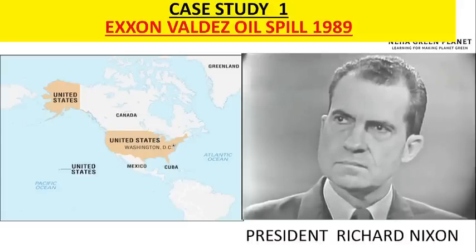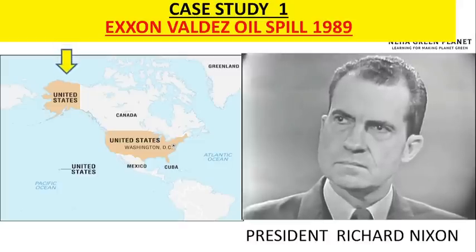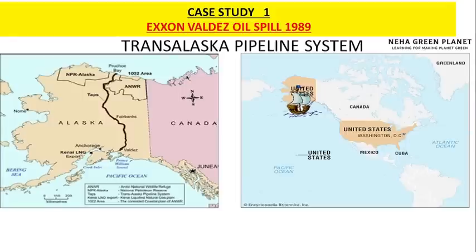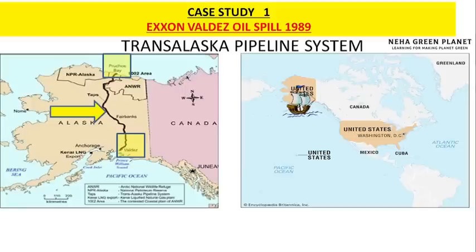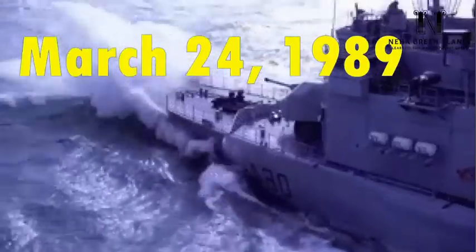US President Richard Nixon started exploring alternate energy options within American territory. A major oil deposit was found in northern Alaska, and the Trans-Alaska Pipeline System was developed to connect Prudhoe Bay in northern Alaska with the Valdez port in southern Alaska. Oil collected at Valdez port was then shipped by companies like ExxonMobil and BP to other states of America.